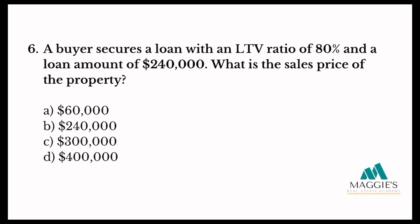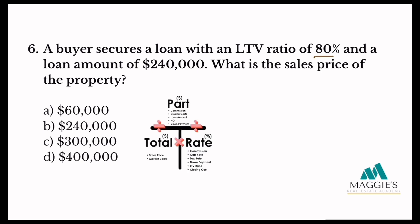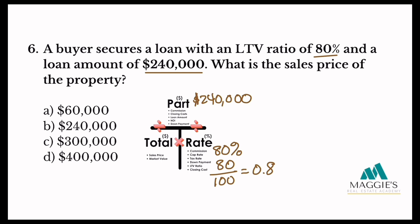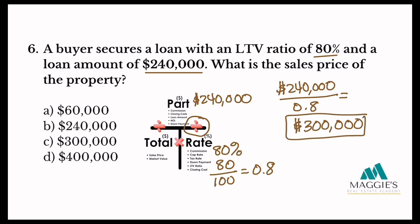Number six: a buyer secures a loan with an LTV ratio of 80% and a loan amount of $240,000. What is the sales price of the property? They gave us a ratio of 80%, so that goes in the rate column — convert to decimal: 0.8. The loan amount of $240,000 is a portion of the sales amount, so it goes on top in the part column. We divide: $240,000 divided by 0.8 equals $300,000. The answer is C.